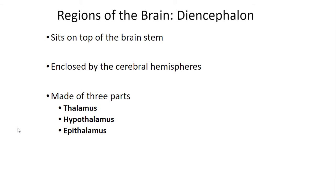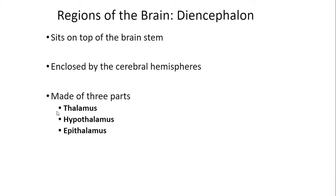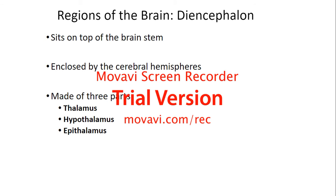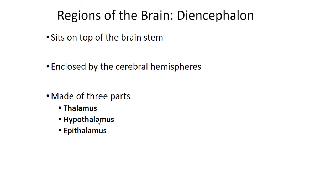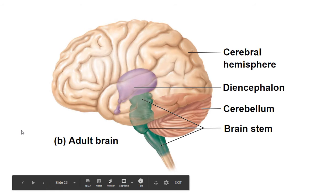The diencephalon is made up of the thalamus, hypothalamus, and epithalamus. It sits on top of the brainstem and is enclosed by the cerebral hemispheres. The thalamus is really important in relaying sensory information. The hypothalamus is important when it comes to relaying information, coordinating with the pituitary gland, and affecting the endocrine system.